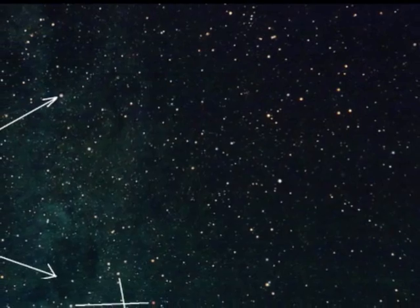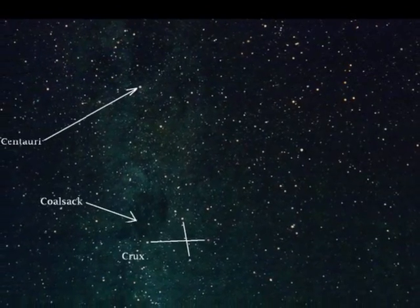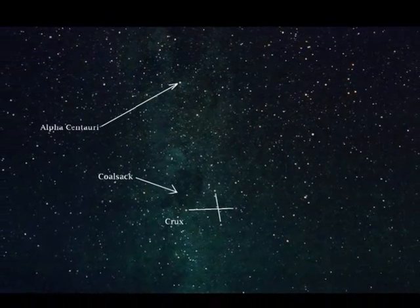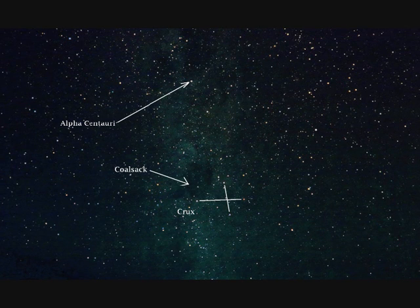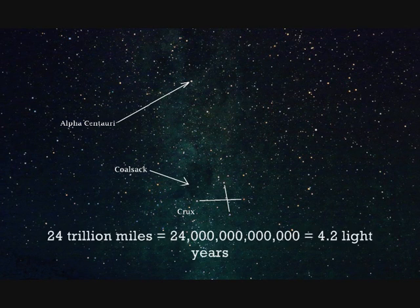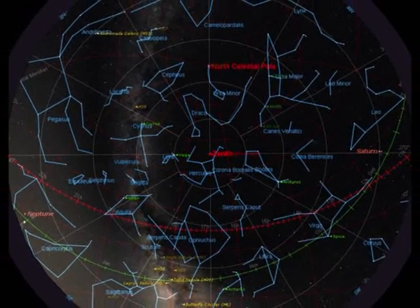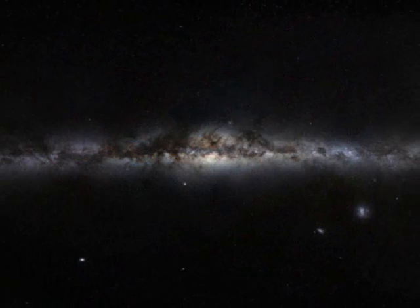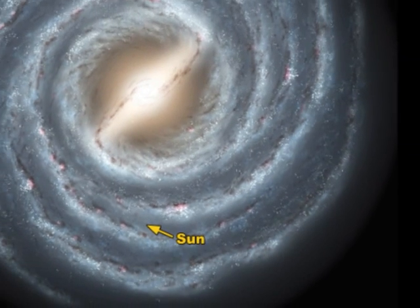Interstellar distances are so vast that our closest neighboring star Alpha Centauri is just over four light years away, meaning it takes 4.2 years for its light to reach us. Light travels at 186,000 miles per second, which means Alpha Centauri is about 24 trillion miles from us. And that is the closest star. Most of the brightest stars we see in the night sky, including all those in the Big Dipper, are within a few hundred light years. Our galaxy is 100,000 light years across, and we are about 26,000 light years from the center.